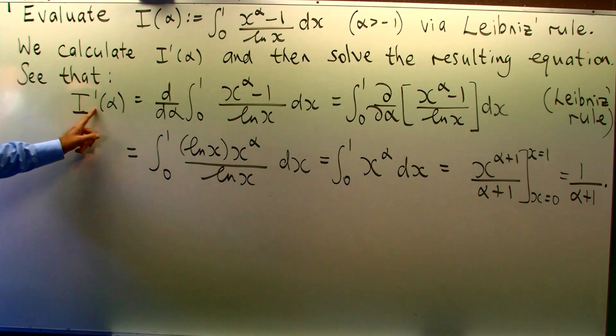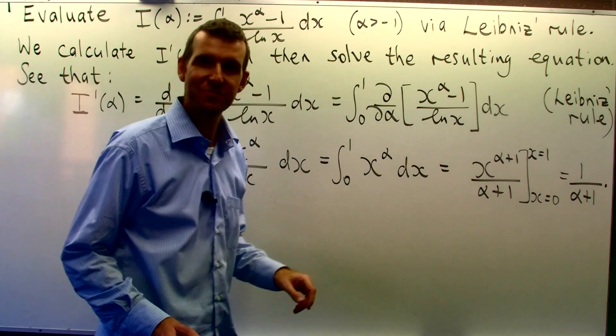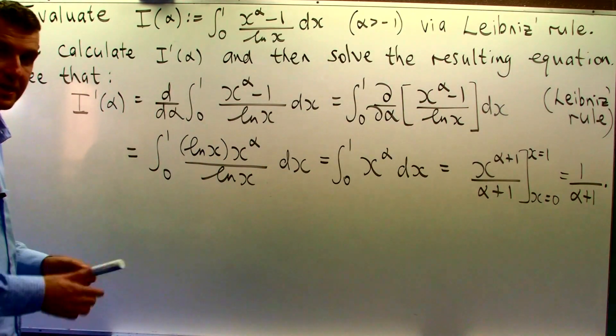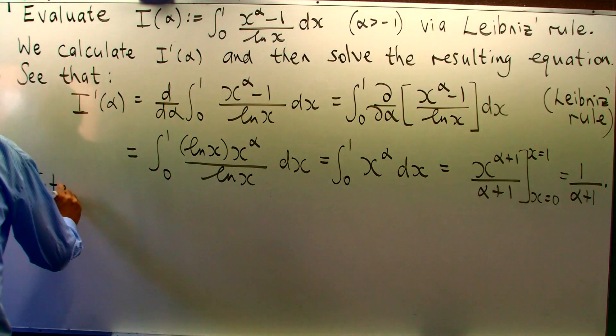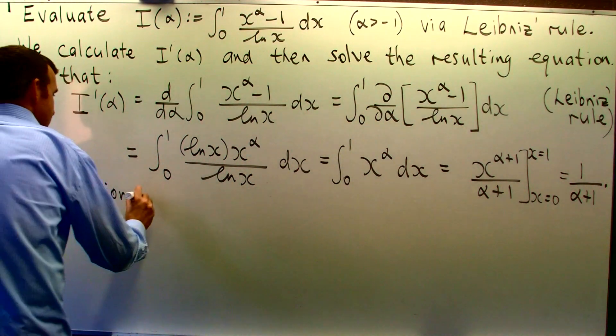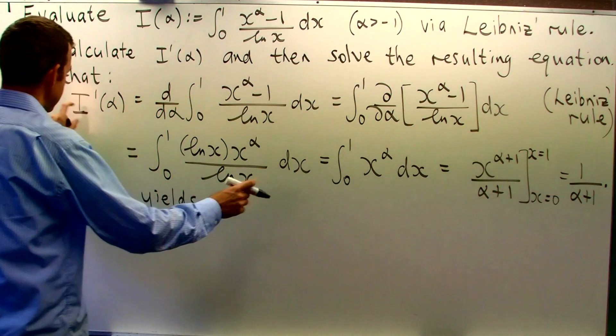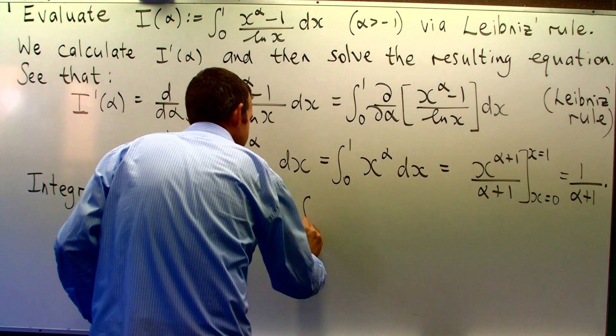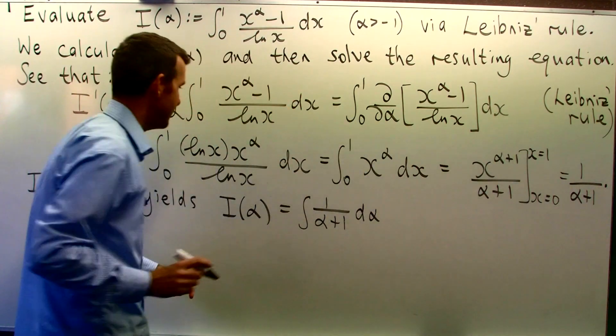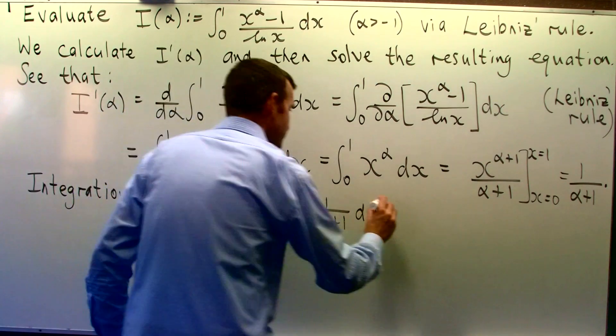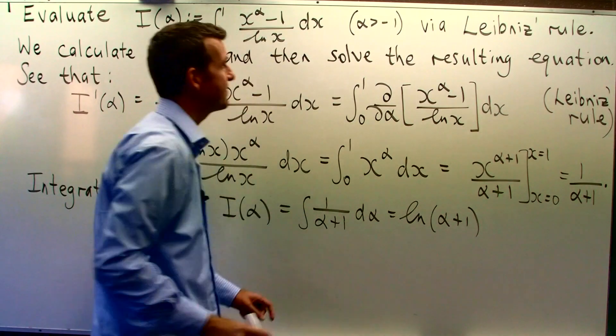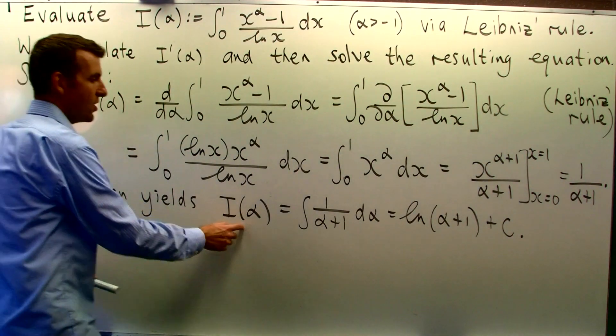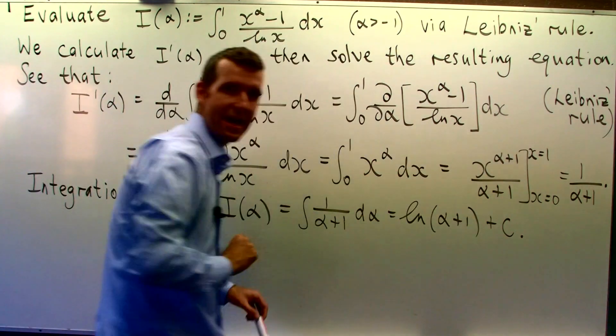So what do we have now? We have I'(α) equals 1/(α+1). So what we can do now, we can integrate both sides here with respect to alpha and then we can form, hopefully, I(α). So if we integrate here and here, integrating with respect to alpha. Now the integral here is just log(α+1). Now I don't need the absolute value signs there because alpha is greater than minus 1 and I can't forget here a constant of integration. I'm going to denote that by c. So we've almost got I(α), which is the thing we wanted.